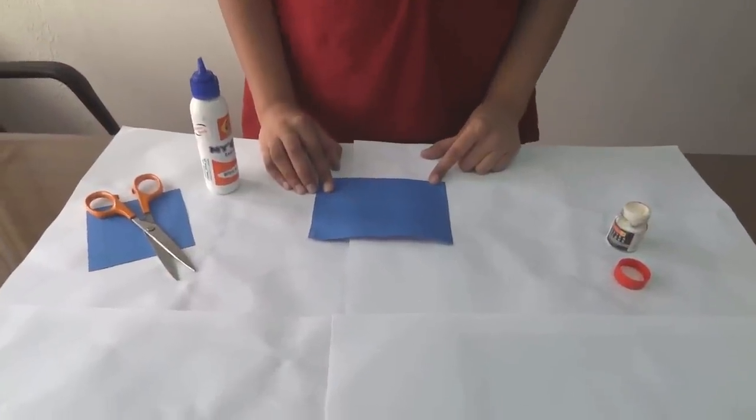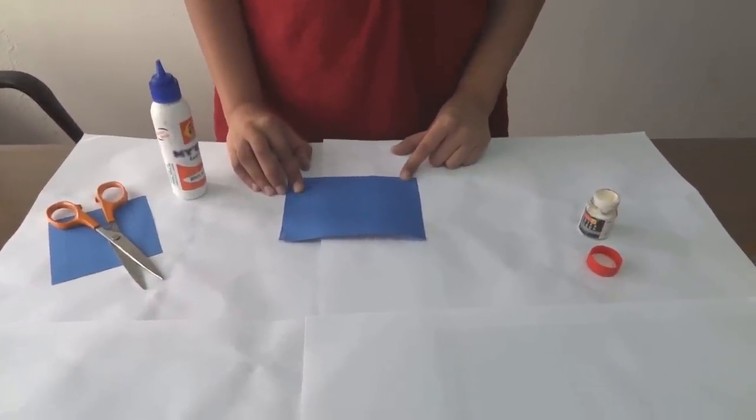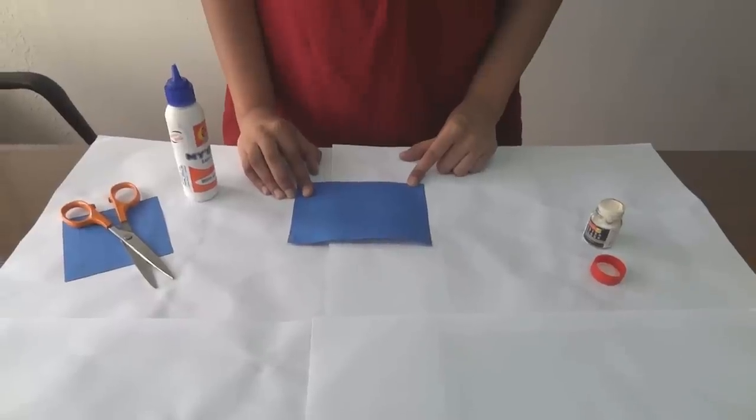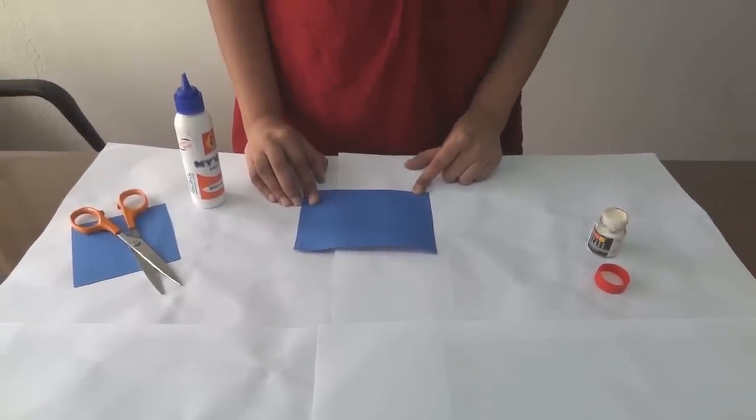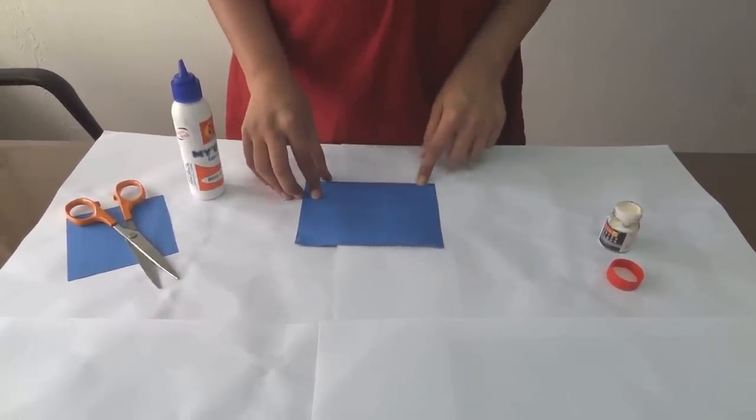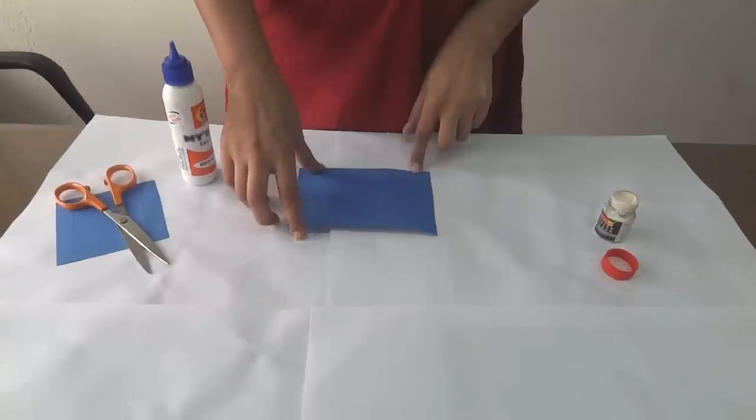You know beautiful objects and sculptures can be made using paper only and this technique is called paper sculpting. Let us make a cute little flower pot using paper sculpting.